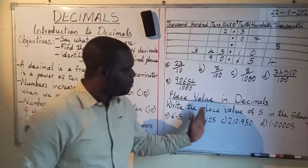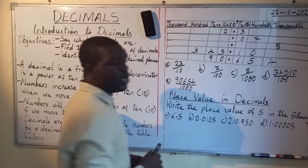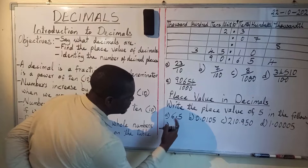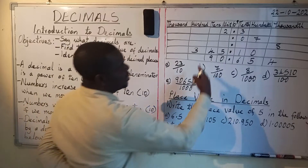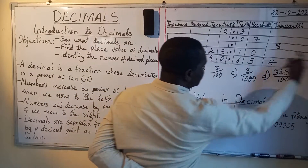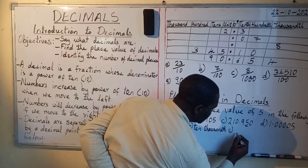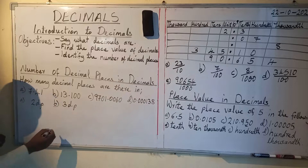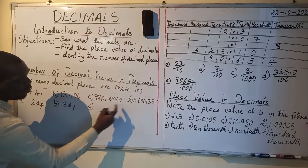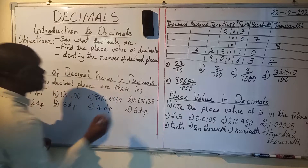Decimals are separated from whole numbers by a decimal point, as seen on the table. On this table, whole numbers are to the left and decimals to the right. On the left columns we have thousands, hundreds, tens, and units. After the decimal point, we have the decimal columns: the first is tenths, the second is hundredths, and the third is thousandths, continuing in that order.